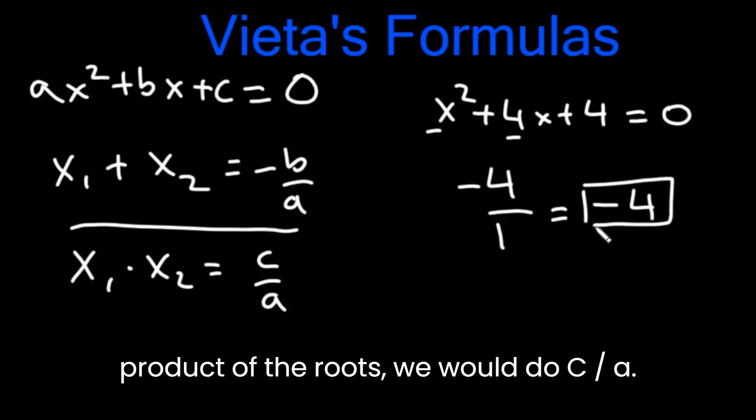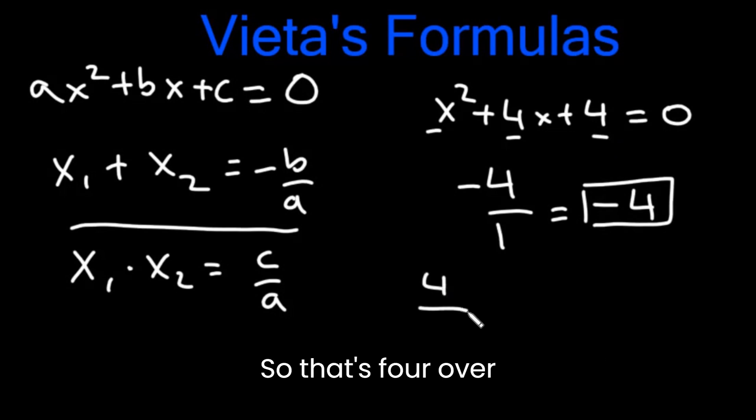If we wanted to find the product of the roots, we would do c over a. So that's 4 over 1. That is 4. So this is the product of the roots.